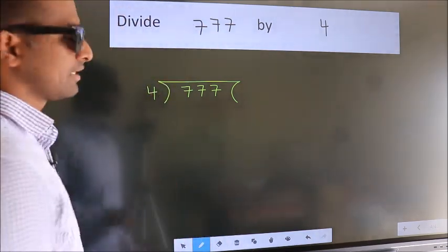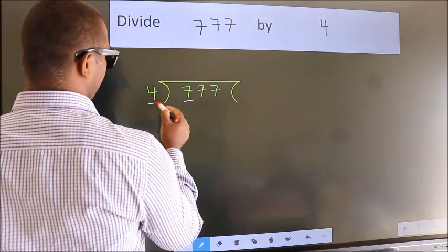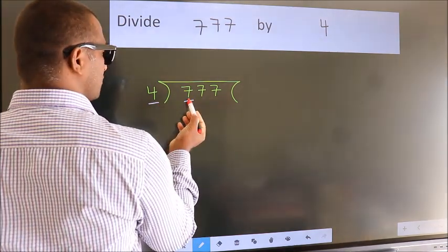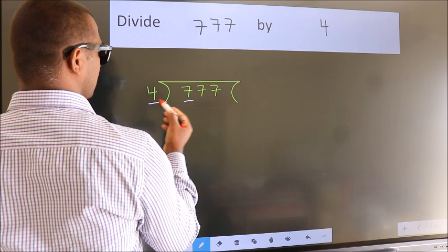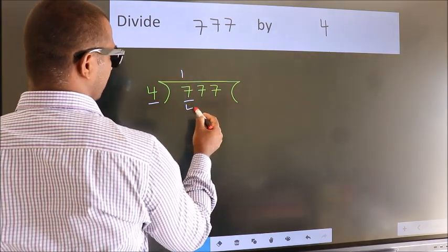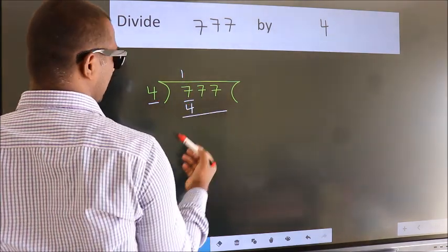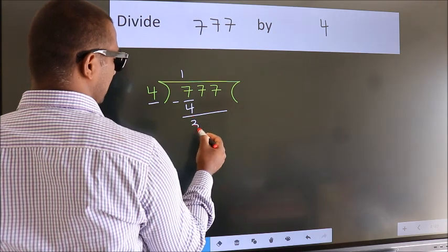Next. Here we have 7, here 4. A number close to 7 in the 4 table is 4. 1 times 4 is 4. Now we should subtract. We get 3.